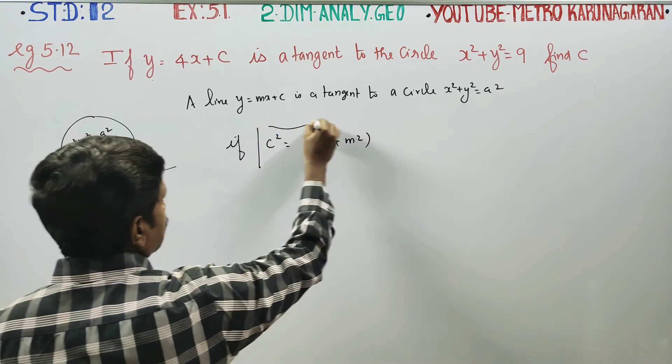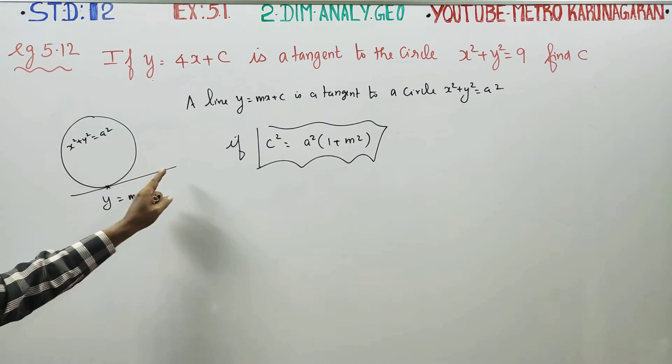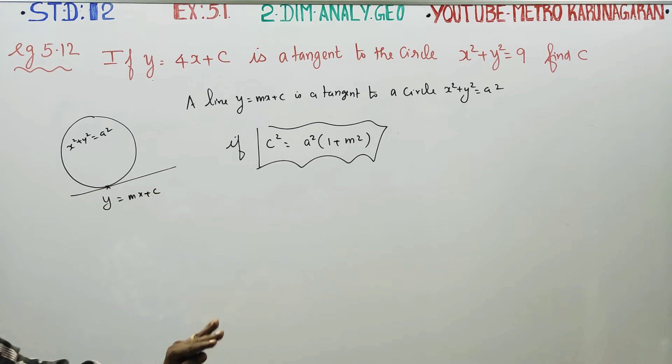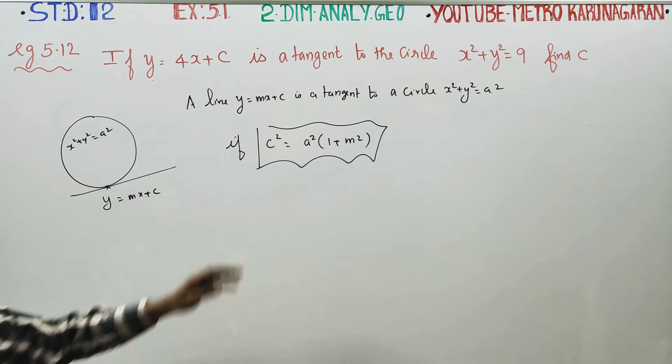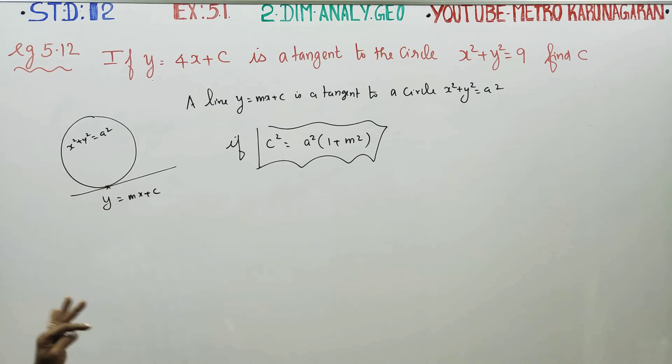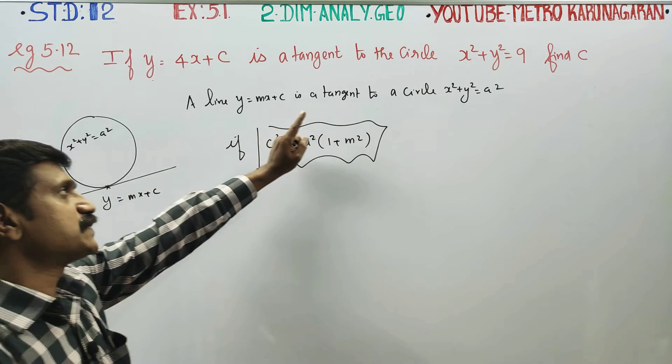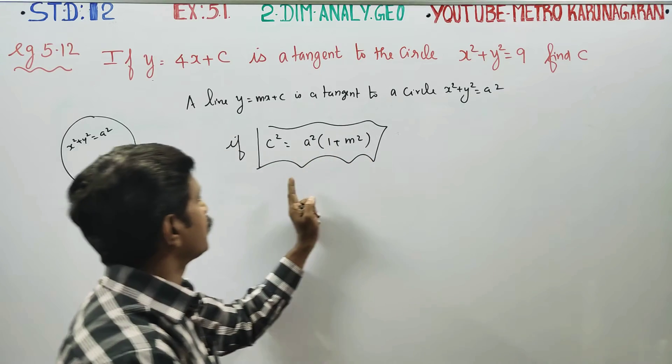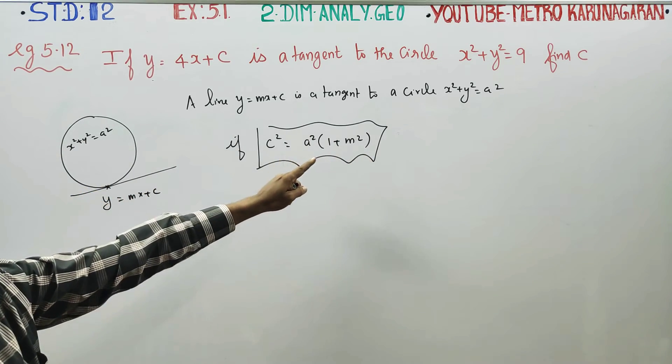This condition must be satisfied for the line to be tangent to the circle. If LHS equals RHS, c square is equal to a square times 1 plus m square. A line y is equal to mx plus c is a tangent to the circle if c square is equal to a square into 1 plus m square.